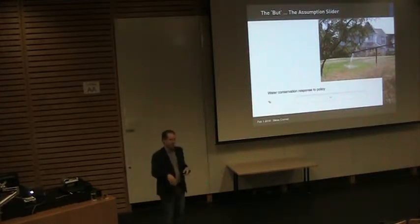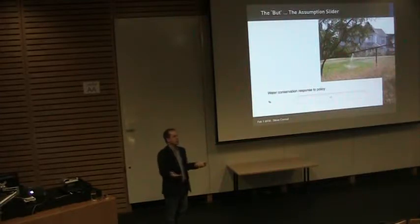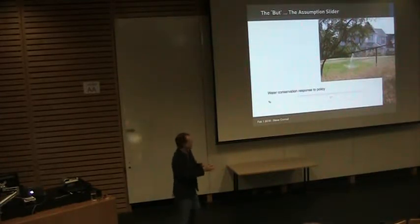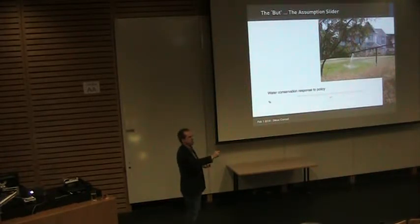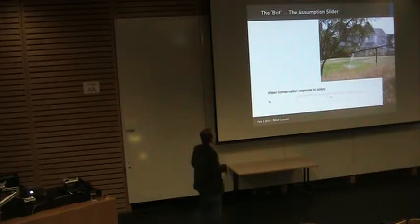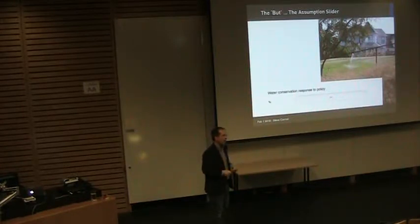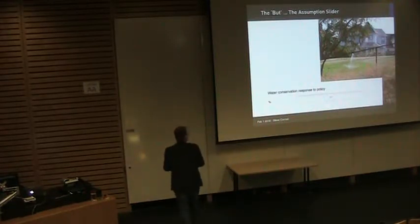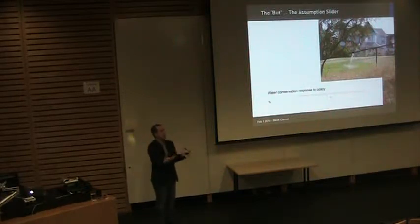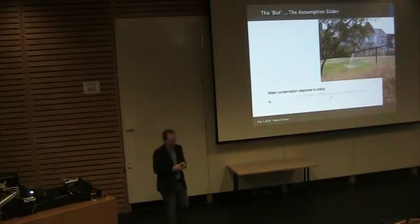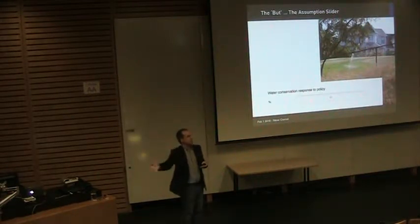When faced with this question, one thing a water modeler might do is add what I call an assumption slider — you don't know what's going to happen, but you put a parameter in the model and say, what if we apply 20% conservation? What happens to the hydrology? What if there was 33% conservation? This works well to get estimates, but it's an assumption — often based on what happened somewhere else, which has a lot of deficiencies.